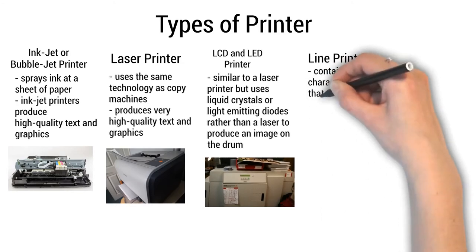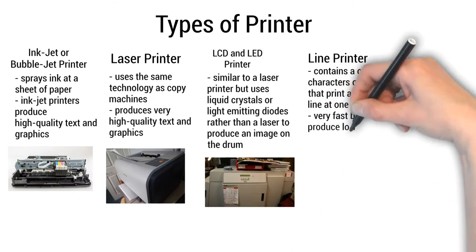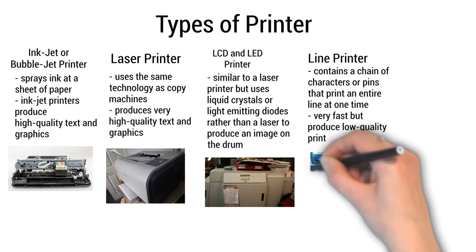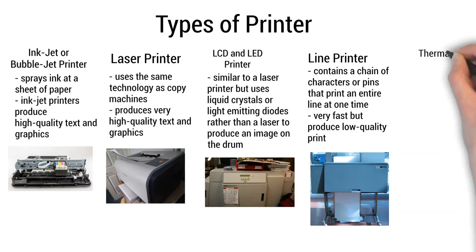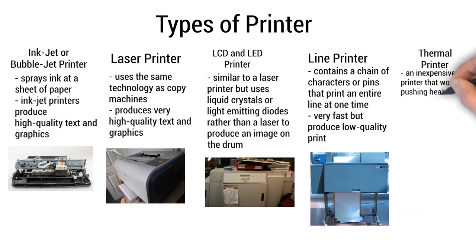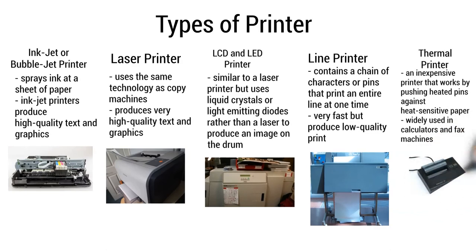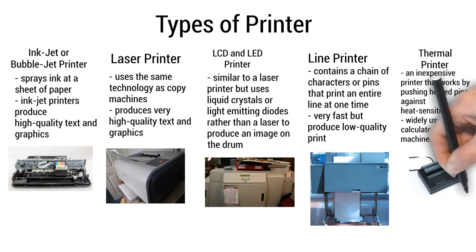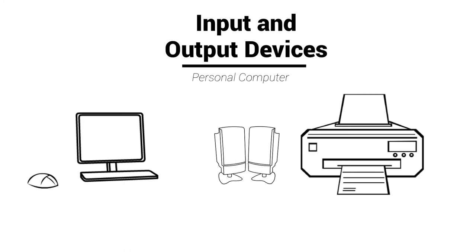A line printer contains a chain of characters or pins that prints an entire line at one time. Line printers are very fast but produce low-quality print. A thermal printer is an inexpensive printer that works by pushing heated pins against heat-sensitive paper. Thermal printers are widely used in calculators and fax machines.